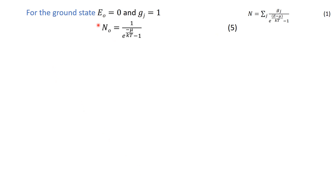For the ground state, the energy E0 is equal to zero. Since this is a non-degenerate state, g(E)dE equals zero. From equation number 1, N0 is given by equation number 5, which gives the number of particles in the ground state, while equation number 4 gives the number of particles in the excited state.